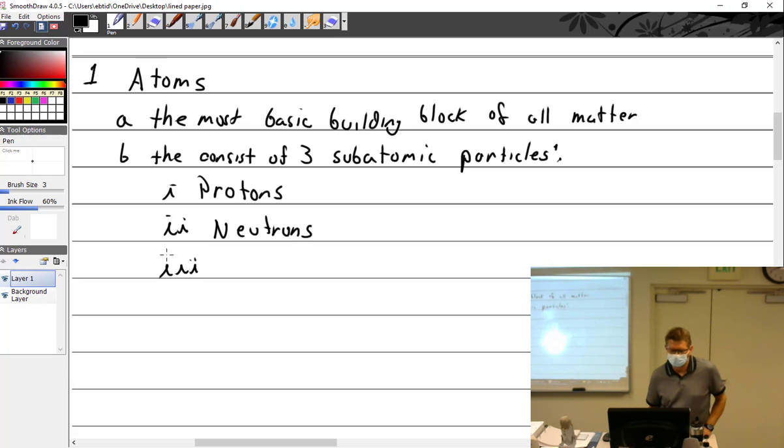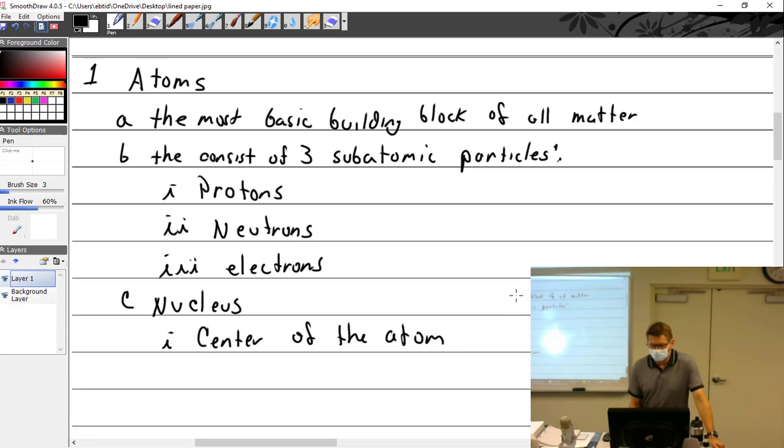And the electrons. All right, so we have those. So let's talk about the nucleus. That is the nougat center. Nucleus, N-U-C-L-E-U-S, is the center of the atom. So if we drew a little diagram of the atom, we'll put one here. We'll say that's the center, the nucleus, if you will. And inside of that, we have protons.